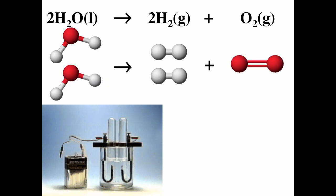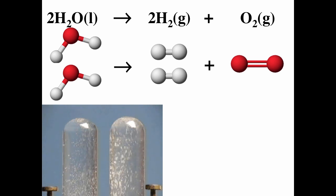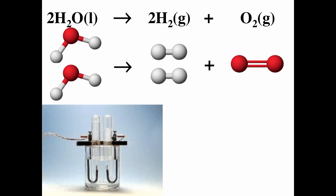Here's another example: the electrolysis of water. The decomposition of water is thermodynamically disfavored but can be made to occur by electrolysis, the application of an external electric current. Platinum electrodes transfer electrons between two cell compartments to separate the decomposition products. Gaseous oxygen rises from the anode at the left, hydrogen from the cathode at the right. From the reaction, for every two moles of water that we decompose, we're going to get two moles of H2 and one mole of O2. So we're producing H2 twice as fast as O2, and we should produce twice as much H2 as O2.